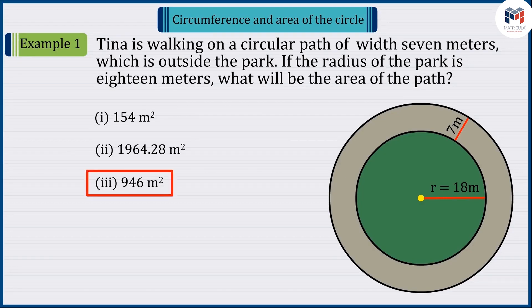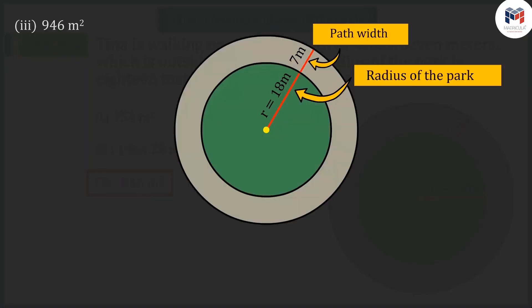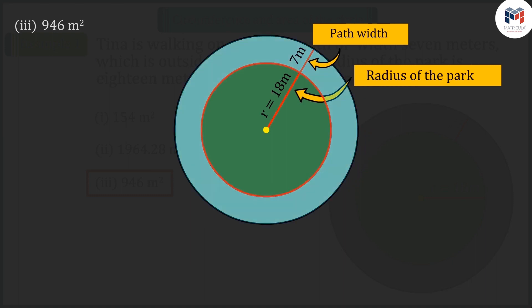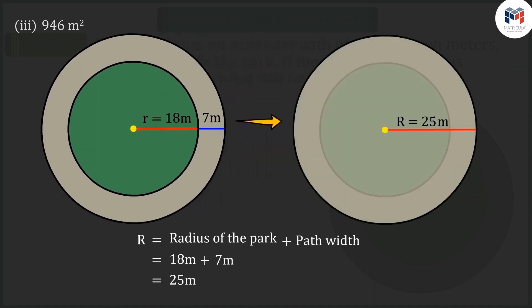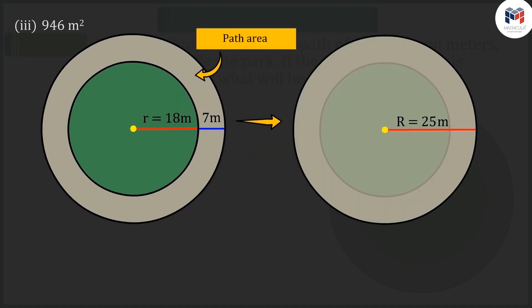Let's discuss option 3. Since it is given that Tina is walking on a 7-meter circular path which is outside the park, we can say that the total radius R of the park including the path will be 25 meters, which we would have displayed from this circle. So, can you find the area of the path from this?